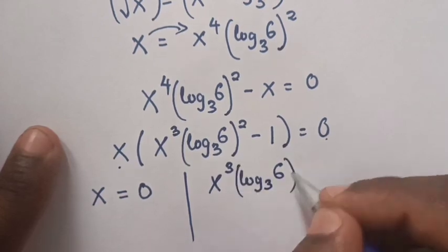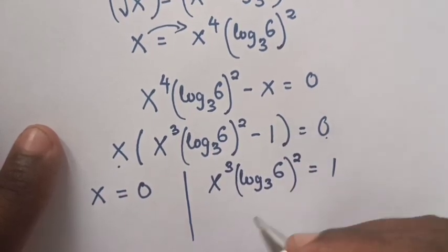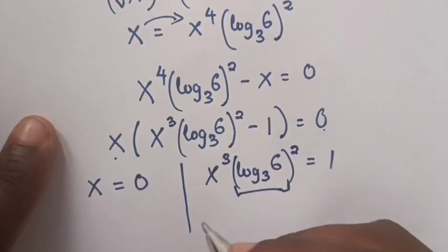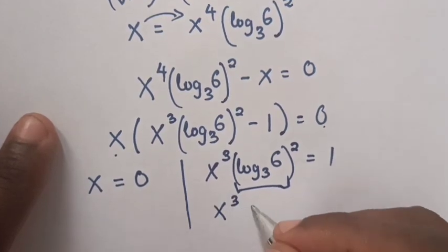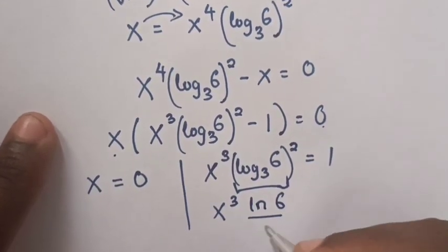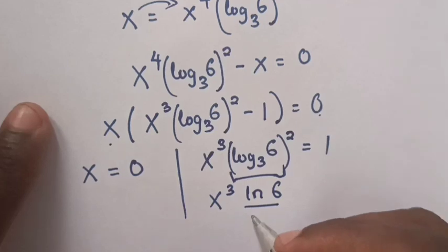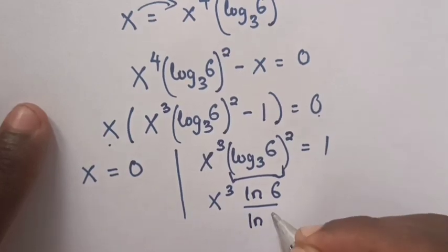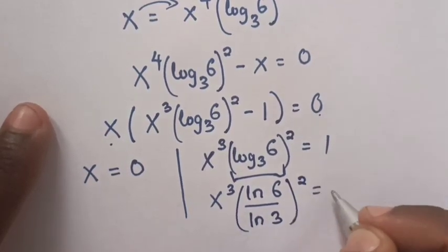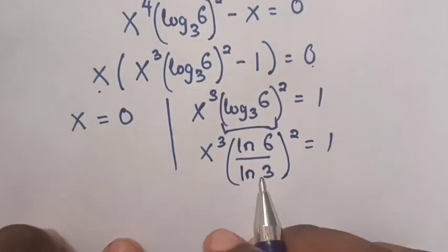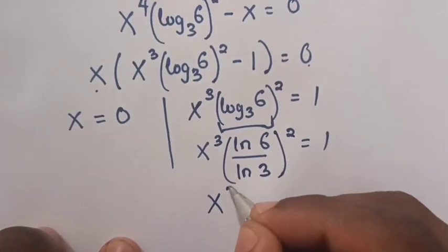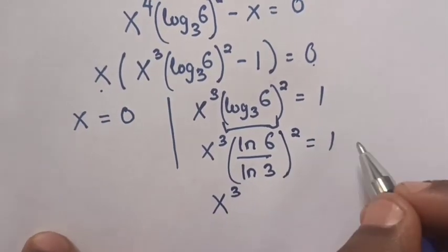Now log 6 base 3 is equal to ln 6 over ln 3, bracket squared, is equal to 1. So x power 3 is equal to ln 3 over ln 6 squared.